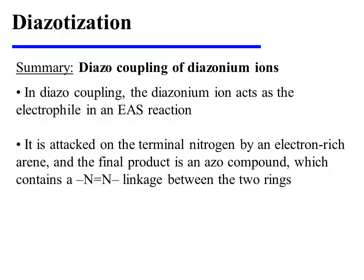In diazocoupling, the diazonium ion acts as the electrophile in an EAS reaction. It is attacked on the terminal nitrogen by an electron-rich arene, and the final product is an azo compound, which contains a nitrogen-nitrogen linkage between the two rings.